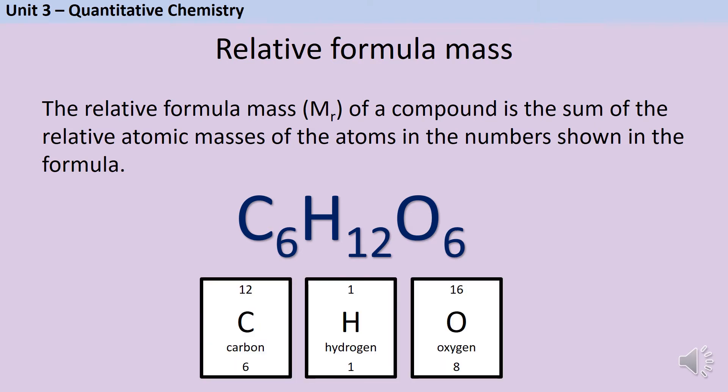If I look at my periodic table squares I can read off the relative atomic mass of each one of those elements and I can then calculate the relative formula mass by adding up the relevant numbers of each atom. So for instance there are six carbon atoms each with a mass of 12, 12 hydrogen atoms each with a mass of one, and six oxygen atoms each with a mass of 16. If I add all of those together I get a relative formula mass for glucose of 180.